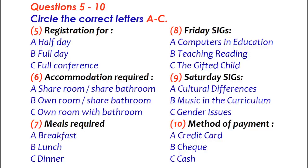Do you want to attend all three days? The conference runs from Thursday to Saturday. Yes, I think so, if I can afford it. What does it cost? Well, you're eligible for a student discount, which makes it $15 for a day registration, or $40 for the three days, though it is possible to register for half a day only. I'll register for all three days, please.